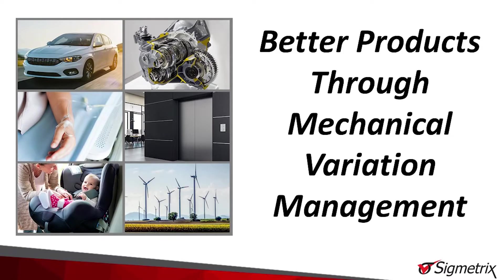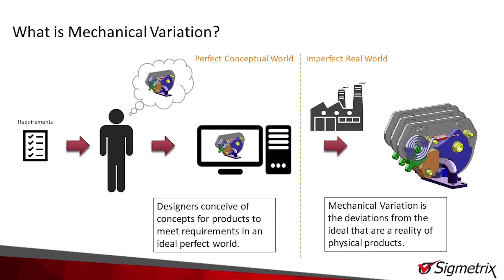Sigmatrix is a company that's been around for over 20 years, and our focus is on helping companies create better products through mechanical variation management. Better products would mean a product that's safer, maybe more efficient, produces less pollution, is more accurate — that's what better products mean. And then variation is that stuff that comes in and makes those products not so good, maybe makes you less competitive or makes your customers less happy. So we're trying to manage that to make a better product for you and your customers.